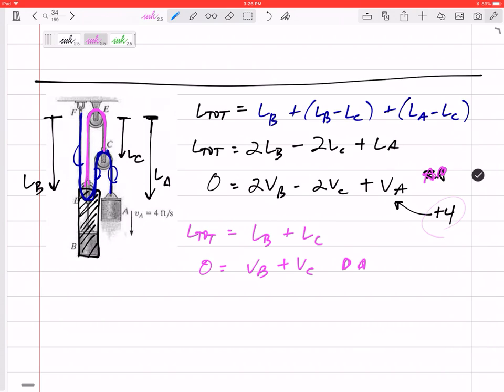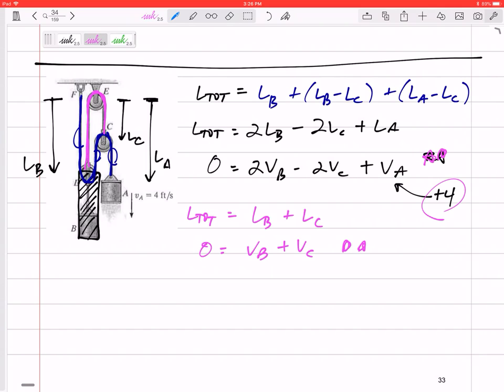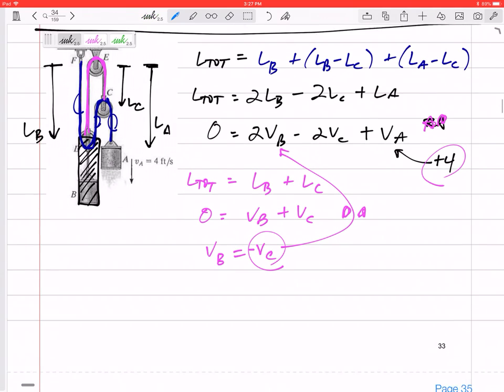After I know this is 4, it's really two equations with two unknowns, VB and VC. I like to just write one in terms of the other, so VB equals negative VC. Plug this in right here for VB.